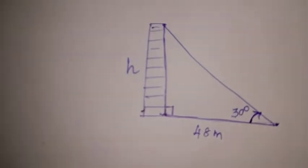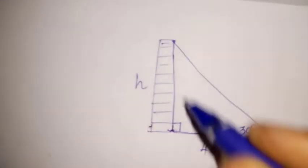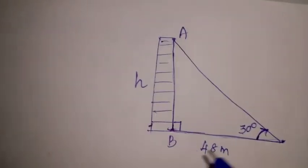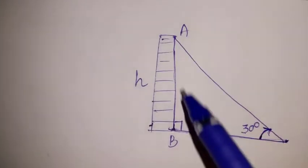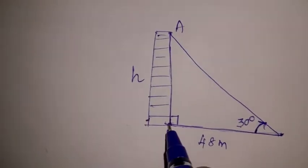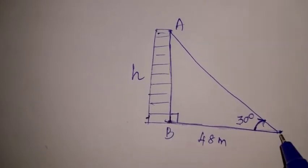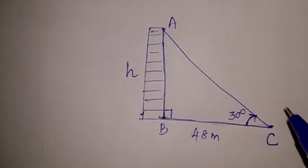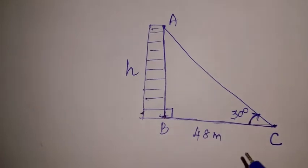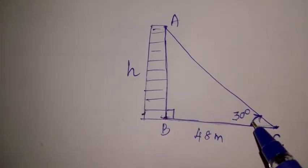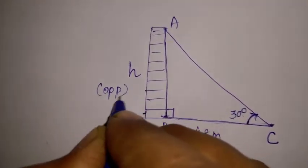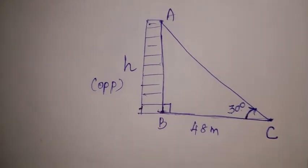Now let's look at the right triangle formed. We have three vertices: the top of the tower is vertex A, the foot of the tower is vertex B, and the point on the ground is vertex C. So the triangle is named ABC. Angle C is 30 degrees, which is the angle of elevation.